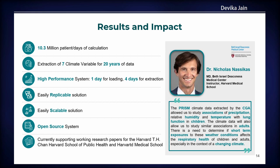Dr. Nicholas Nasikas is using this climate data. He provided a quote: 'The PRISM climate data extracted by the CGA allowed us to study associations of precipitation, relative humidity, and temperature with lung function in children. The climate data will also allow us to study similar associations in adults. There's a need to determine if short-term exposures to these weather conditions affect the respiratory health of children and adults, especially in the context of a changing climate.' Currently two research papers are being conducted — one at the School of Public Health, one at Harvard Medical School — with plans to expand to many more.